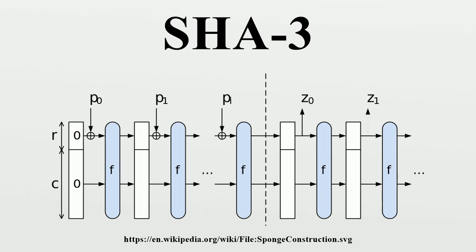Pi: permute the 25 words in a fixed pattern. A[j, 2i+3j] ← A[i,j]. Chi: bitwise combine along rows using XOR-AND. To be precise, A[i,j,k] ← A[i,j,k] ⊕ (¬A[i,j+1,k] ∧ A[i,j+2,k]).